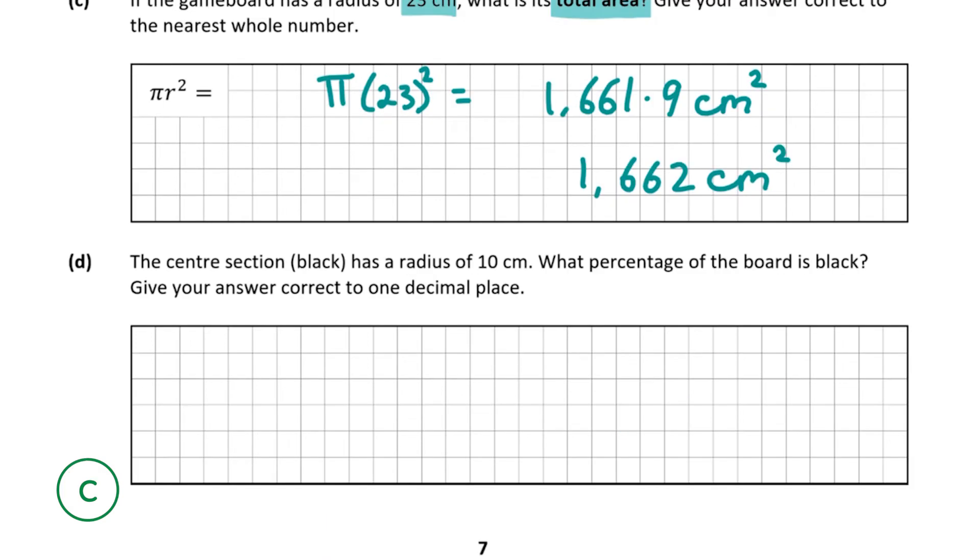In question D, the center section or black section has a radius of 10 centimeters. What percentage of the board is black? Give your answer correct to one decimal place. First, we'll find the area of the center section. To do that, we're going to use πr² where radius is 10, squared.